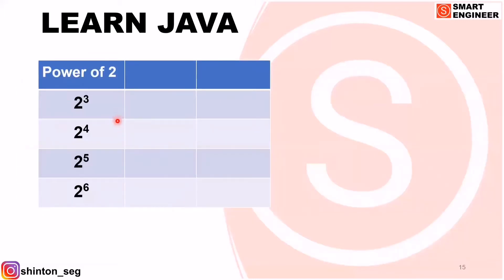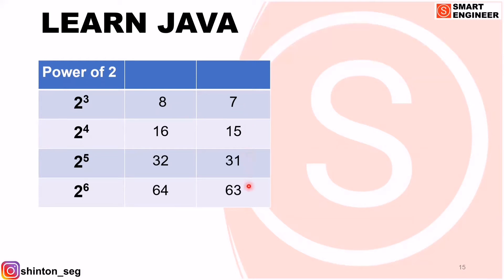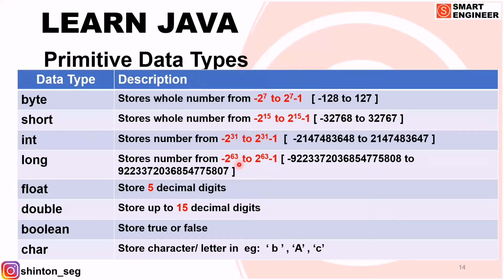Powers of two: 2 cubed is 8, 2 raised to 4 is 16, 2 raised to 5 is 32, 2 raised to 6 is 64. Now subtract one: 8 minus 1 is 7, 16 minus 1 is 15, 32 minus 1 is 31, 64 minus 1 is 63. So byte can store numbers from minus 128 to 127. Similarly, short can store from negative 2 raised to 15 to 2 raised to 15 minus 1. Like that, int and long also have their respective limits.